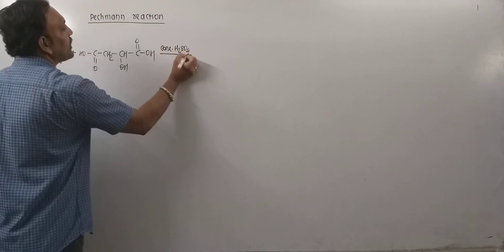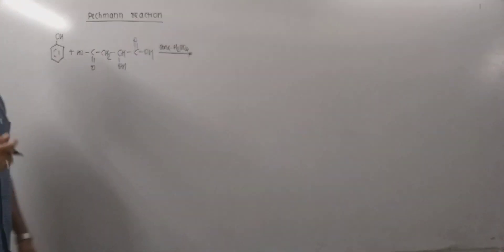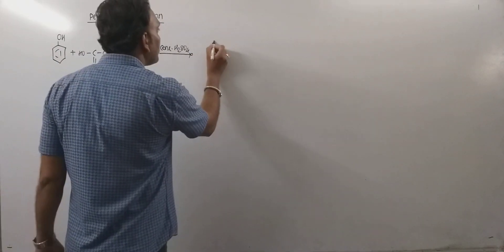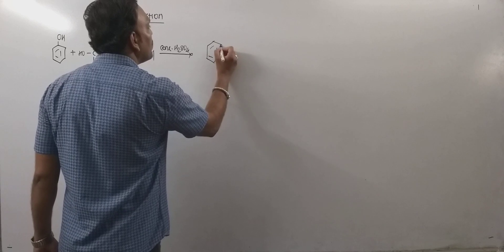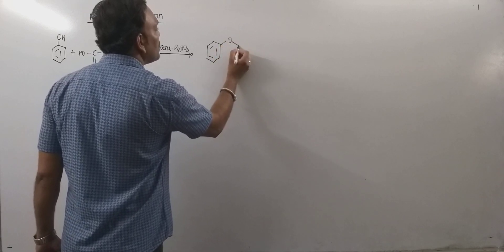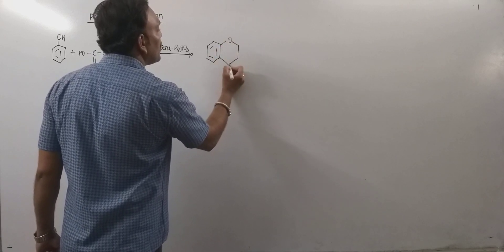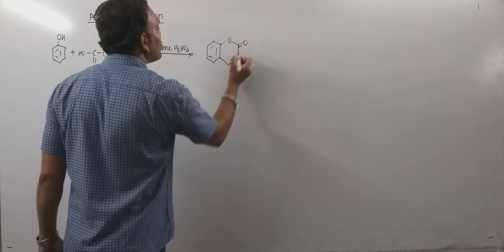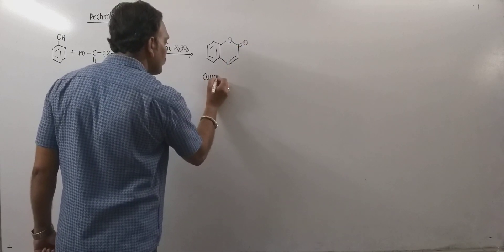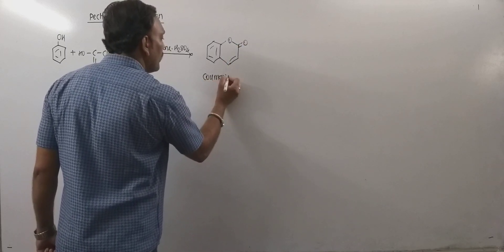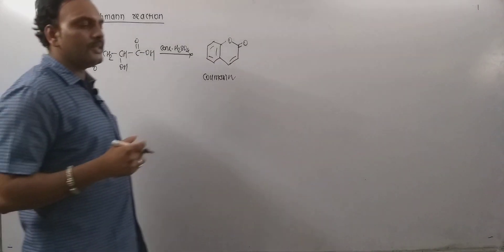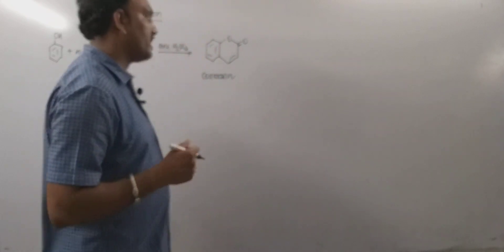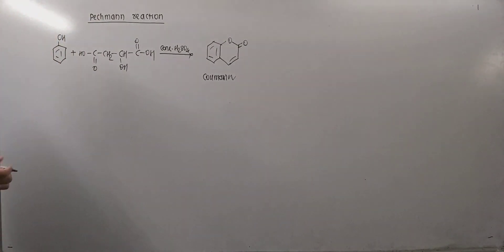Thus phenol, that is carbolic acid, when treated with malic acid in presence of concentrated sulfuric acid, then ultimately coumarin is formed. This is the coumarin obtained. So ultimately coumarins can be produced in this fashion by using this Pechman's reaction.